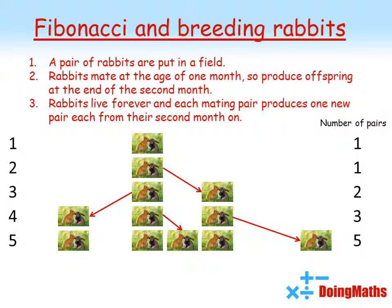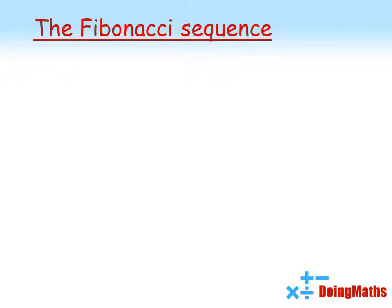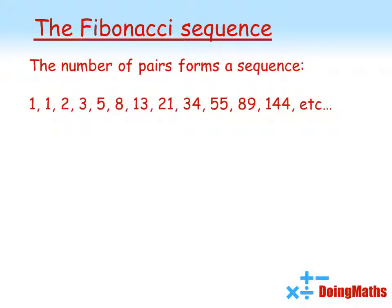Going into the sixth month, our original pair have produced another pair of offspring, our second pair have also produced another pair, and our third pair have also reached the age where they can produce a new pair, so we've got eight pairs of rabbits. Fibonacci kept thinking along these lines, and as he counted the pairs of rabbits, these are the numbers he got.